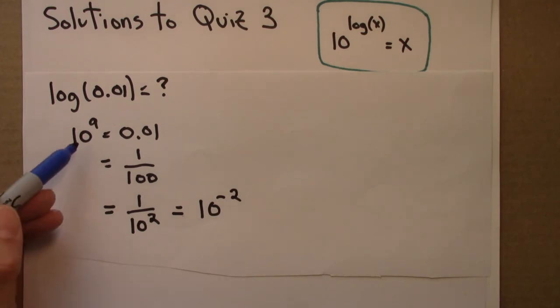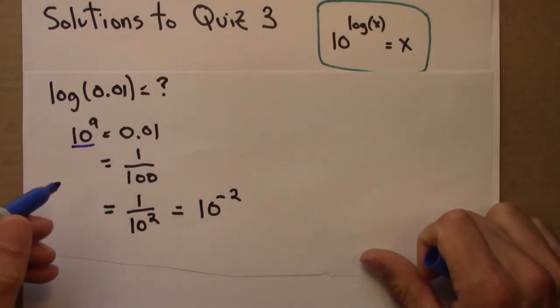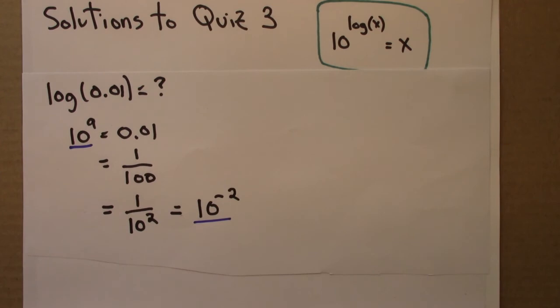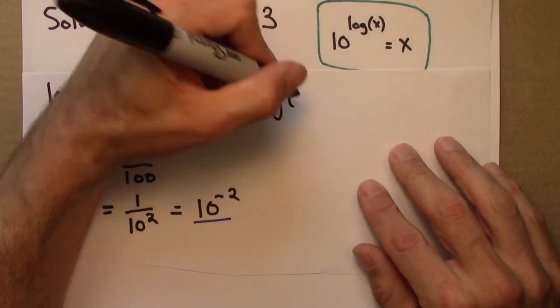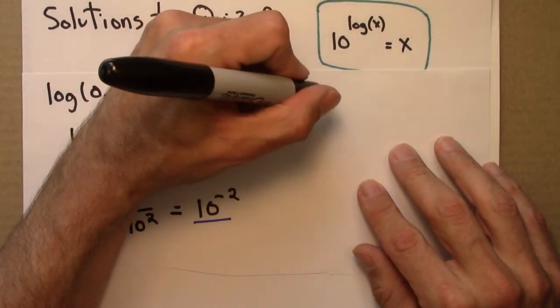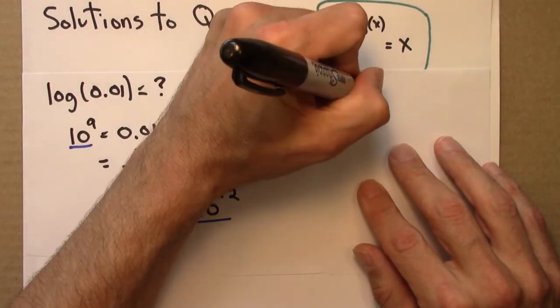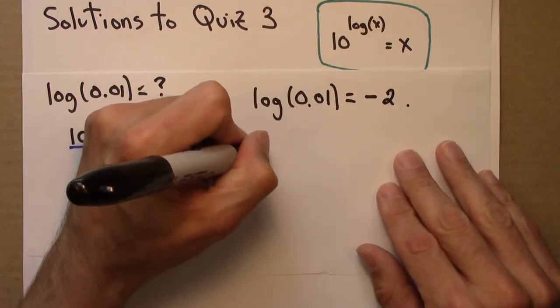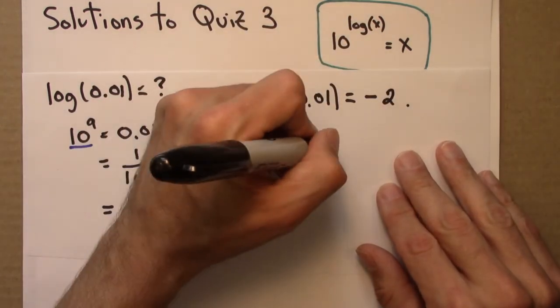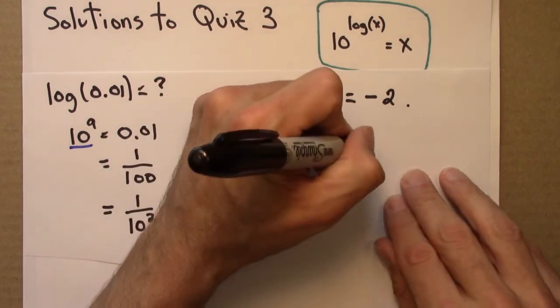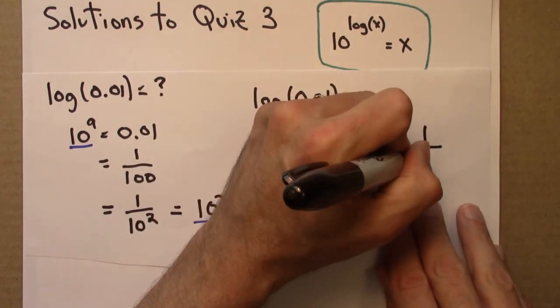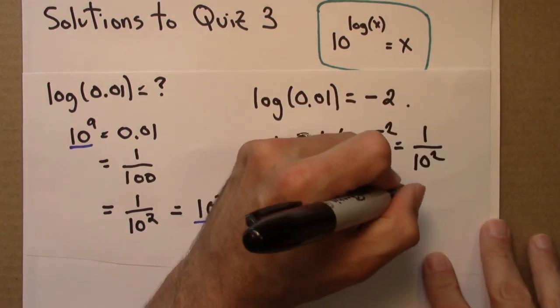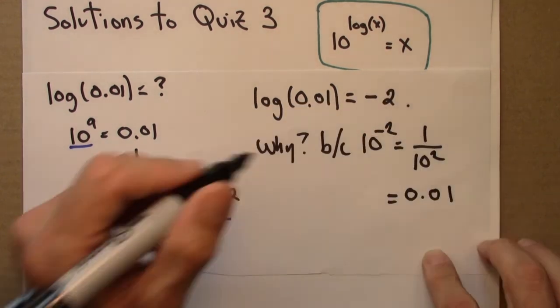So aha, 10 to the a equals 10 to the minus 2, so it must be that a equals minus 2. So we would say, just to write it out, that log 0.01 equals minus 2. Why? Because 10 to the minus 2, that's the same as 1 over 10 squared, and that equals 0.01.